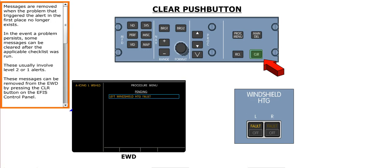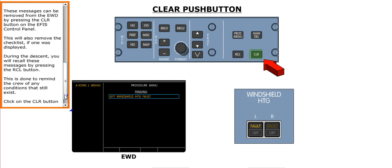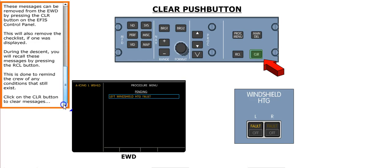Messages are removed when the problem that triggered the alert in the first place no longer exists. In the event a problem persists, some messages can be cleared after the applicable checklist was run. These usually involve level 2 or 1 alerts. These messages can be removed from the EWD by pressing the Clear button on the EFIS control panel. This will also remove the checklist if one was displayed. During the descent, you will recall these messages by pressing the Recall button. This is done to remind the crew of any conditions that still exist. Click on the Clear button to clear messages.